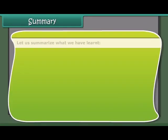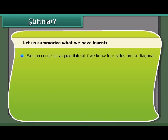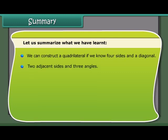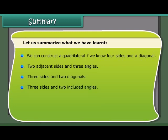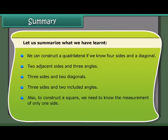Summary: We can construct a quadrilateral if we know: four sides and a diagonal; two adjacent sides and three angles; three sides and two diagonals; or three sides and two included angles. To construct a square, we need to know the measurement of only one side.